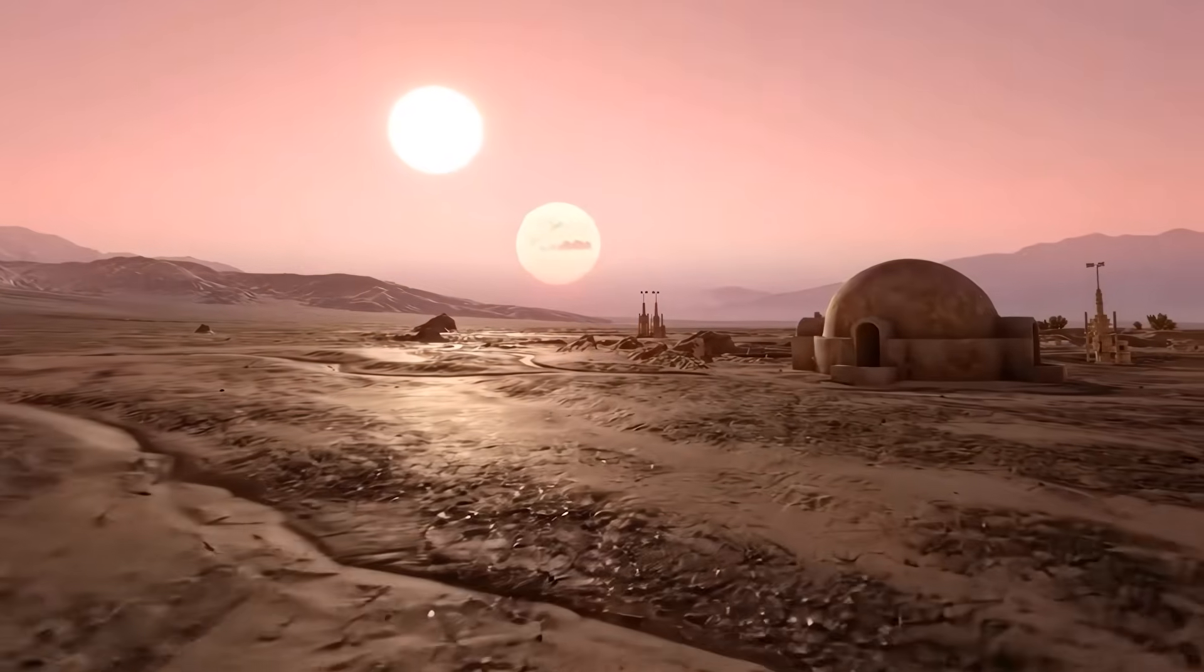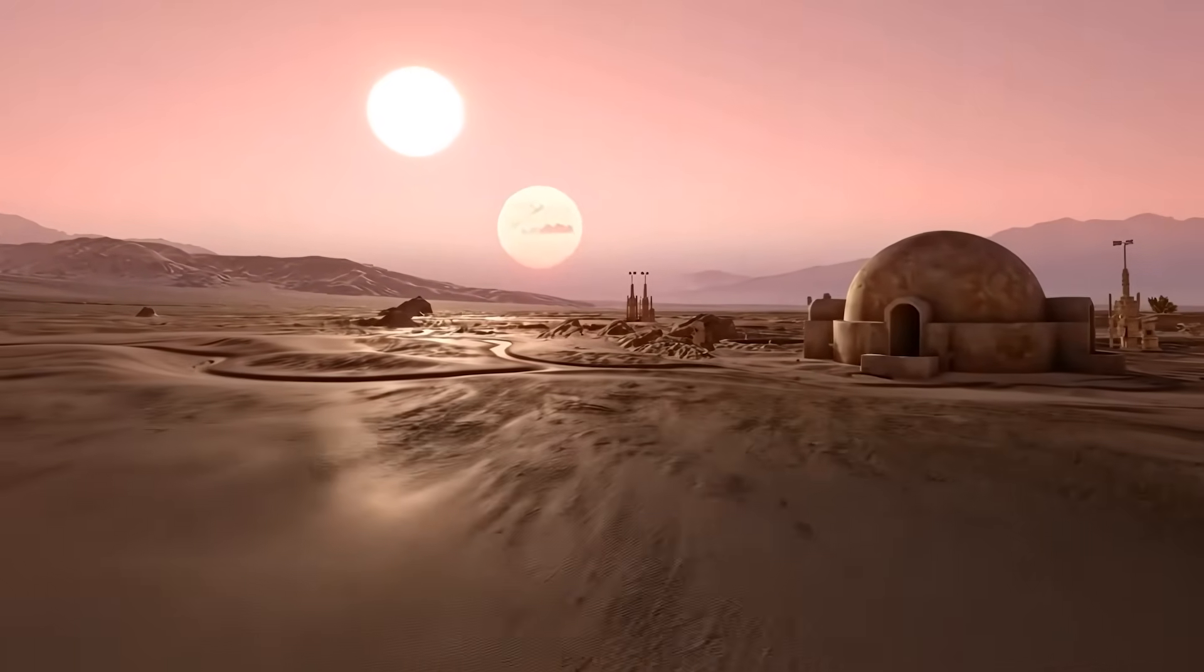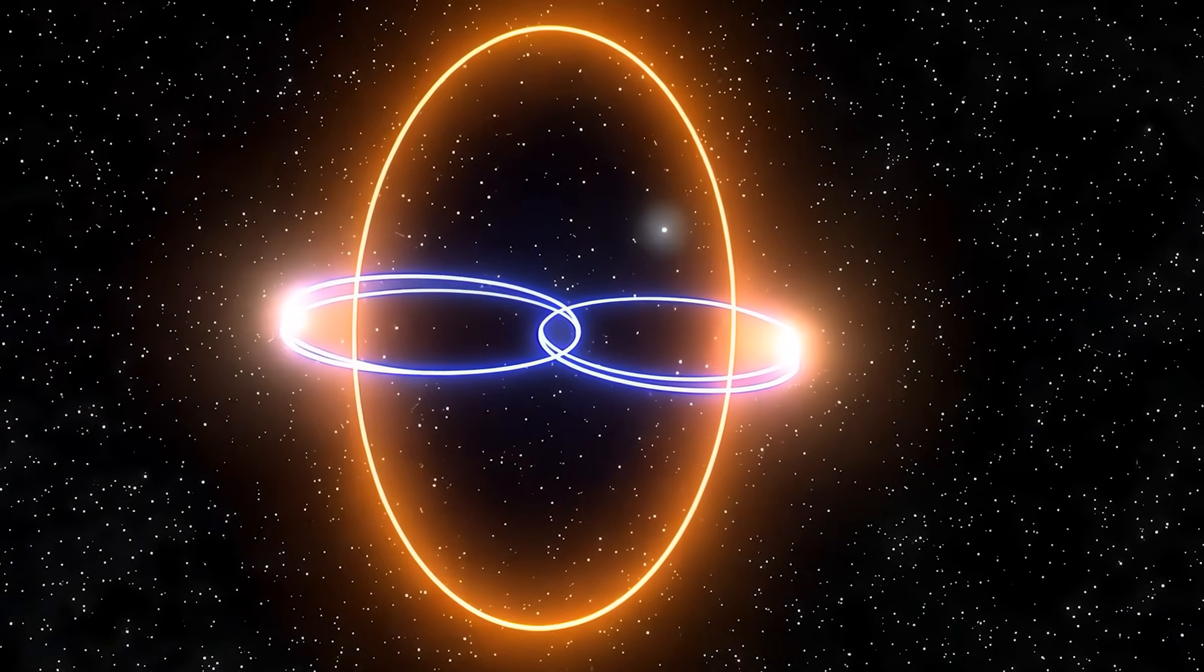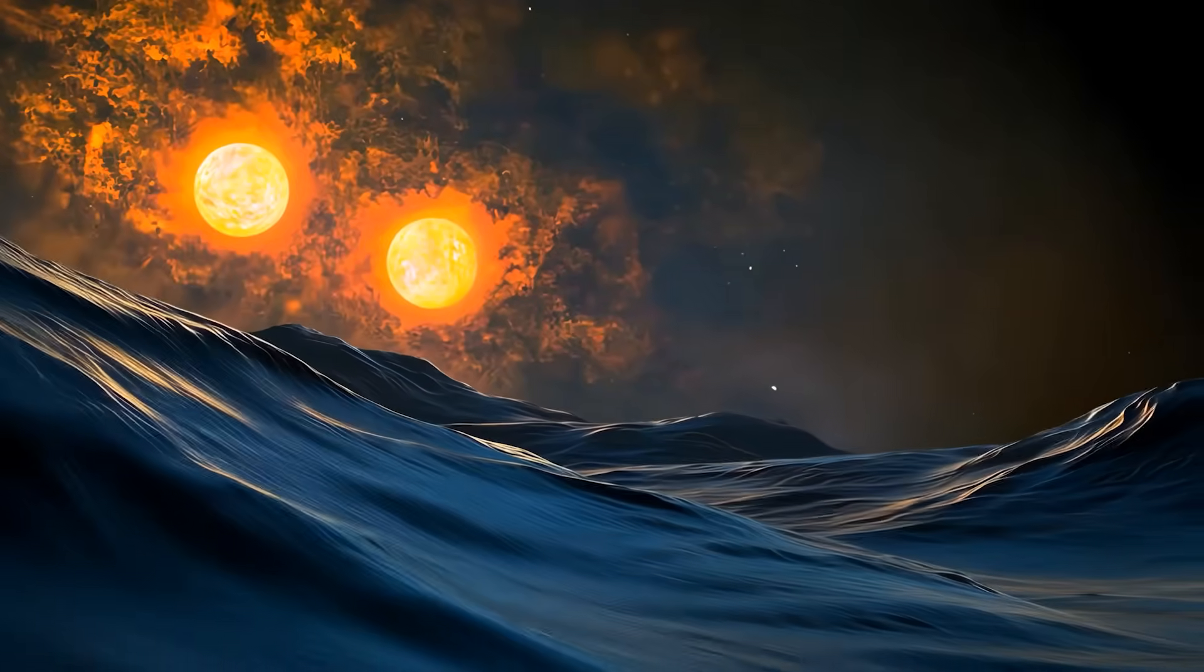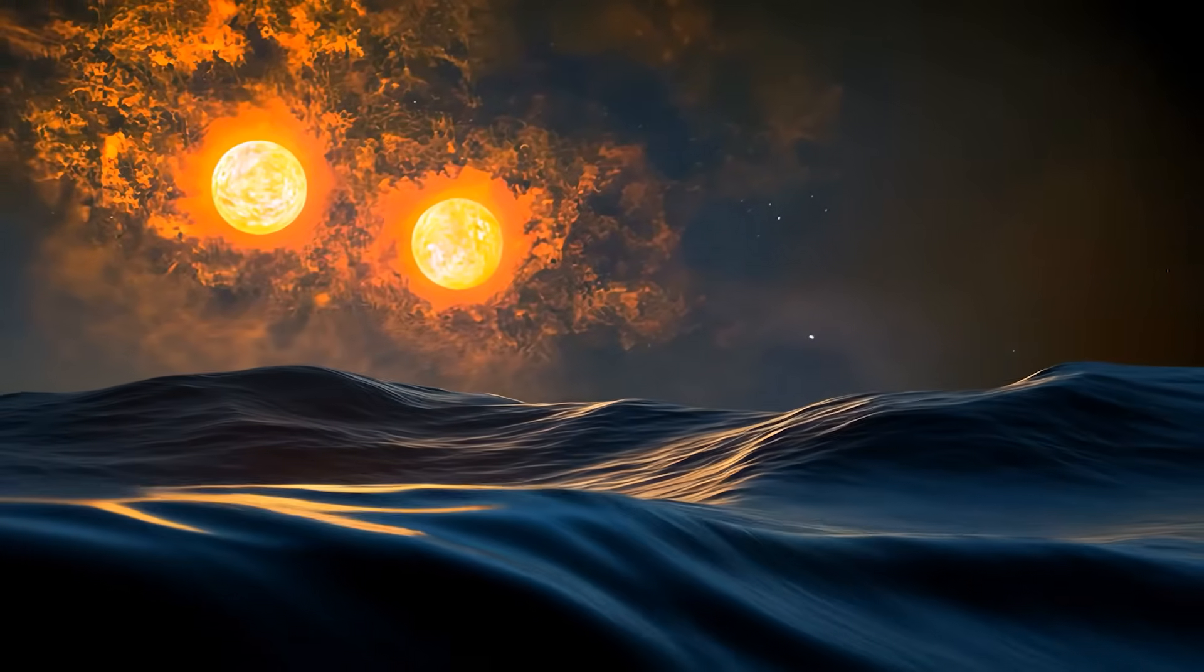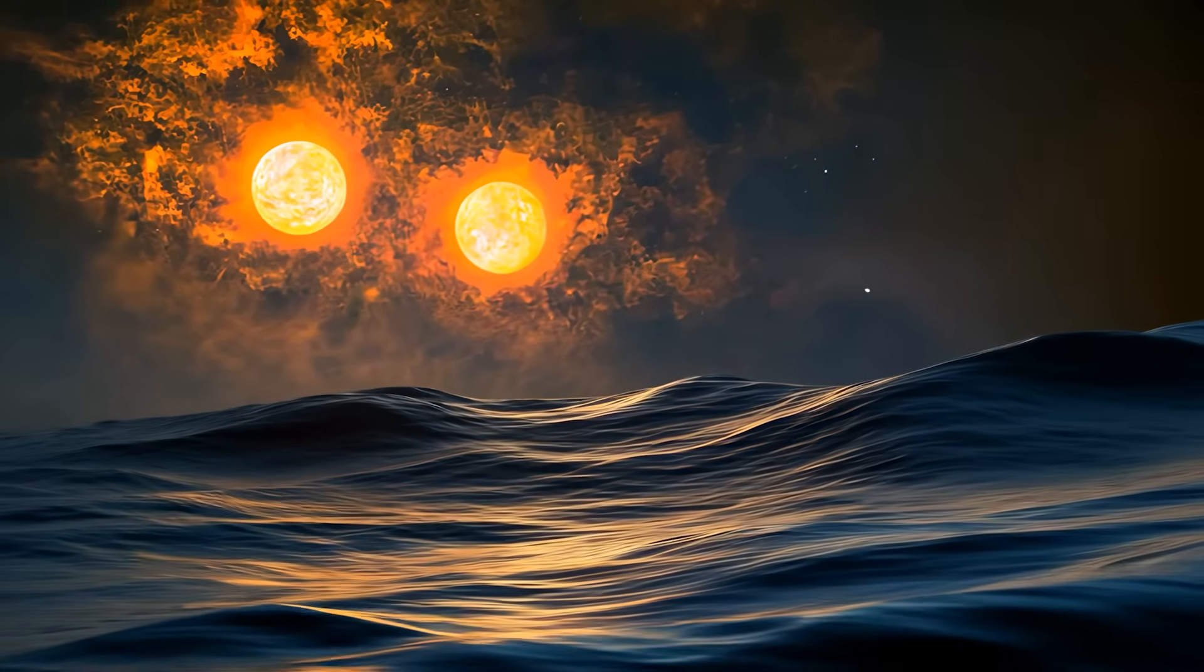If Tatooine from Star Wars challenged our imagination with its harsh desert environment and binary suns, the reality of life on 2M1510ABb would be exceptionally more alien. Unlike the fictional planet's relatively consistent climate, this polar orbiting world experiences environmental extremes unlike anything in our galaxy, far, far away.